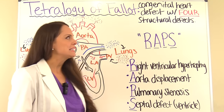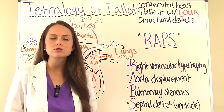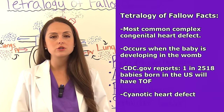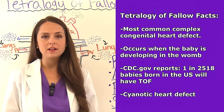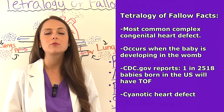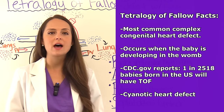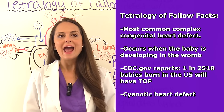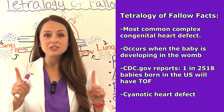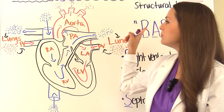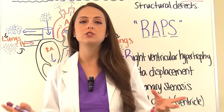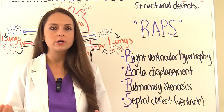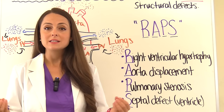What is Tetralogy of Fallot? It is a congenital heart defect characterized by four structural defects of the heart. It is one of the most common complex congenital heart defects, occurring when the baby is developing in the womb and parts of the heart do not form correctly. According to CDC.gov, in every 2,518 births one baby in the US will be born with this condition. It is known as a cyanotic heart defect, meaning there is decreased pulmonary blood flow to the lungs, so blood cannot become oxygenated, causing cyanosis — a bluish tint to the skin.